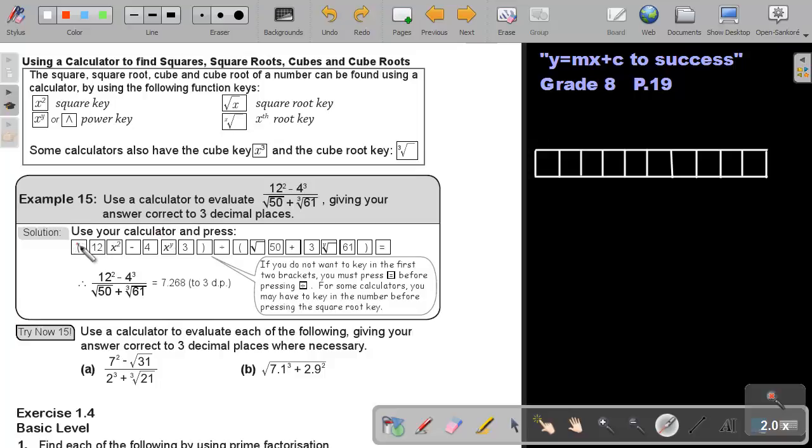Now, let's see how to press it on the calculator. Start by putting a bracket. Then 12, then to the power of 2, that key, square, then the minus, then the 4, then if your calculator is not having a cube, then it's that key, or you can also press this key, some calculator, then press the 3, then close the bracket.